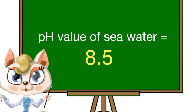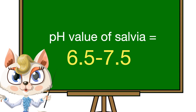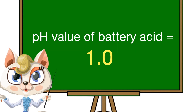The pH value of seawater is 8.5. The pH value of tears is 7.4. The pH value of saliva is 6.5 to 7.5. The pH value of feces for a normal healthy person is 6.6.